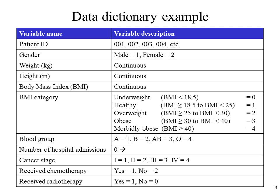The BMI categories are underweight, healthy, overweight, obese, and morbidly obese — and there's a natural order to these categories. So I've assigned these categories 0, 1, 2, 3, and 4.